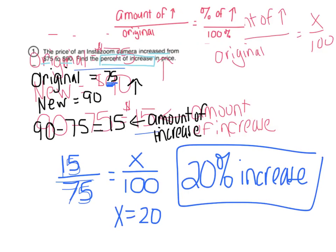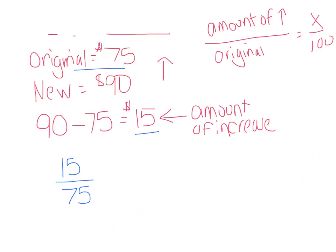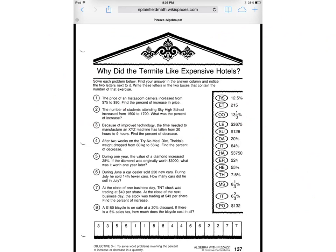What you want to do now with this particular worksheet is go back to the worksheet and see which one of these has 20%. I look over to the right and I see the letters DA has 20%. So you can either do this now or at the end — it doesn't matter — but I'm going to take any box numbered 1 and put DA in it.